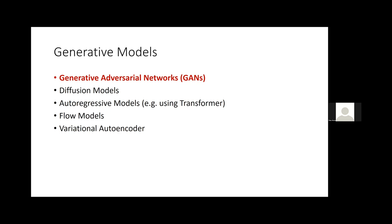Very recently we saw strong competition from two other models: diffusion models and autoregressive models using transformers. A bit behind in quality are flow models and variational autoencoders, which are not really competitive at the moment with these three other models. However, it is also important to consider that many current models use a mixture of different types of concepts.